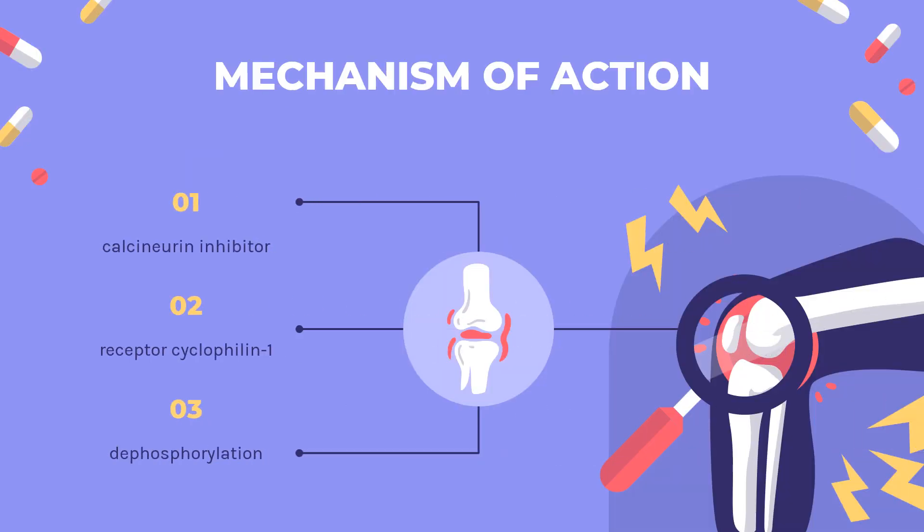Mechanism of Action: Cyclosporine is a calcineurin inhibitor that inhibits T-cell activation. Its binding to the receptor cyclophilin-1 inside cells produces a complex known as cyclosporine-cyclophilin. This complex subsequently inhibits calcineurin, which in turn stops the dephosphorylation and activation of the nuclear factor of activated T-cells (NFAT), that normally cause inflammatory reactions. NFAT is a transcription factor that promotes the production of cytokines such as IL-2, IL-4, interferon gamma, and TNF-alpha, all of which are involved in the inflammatory process.